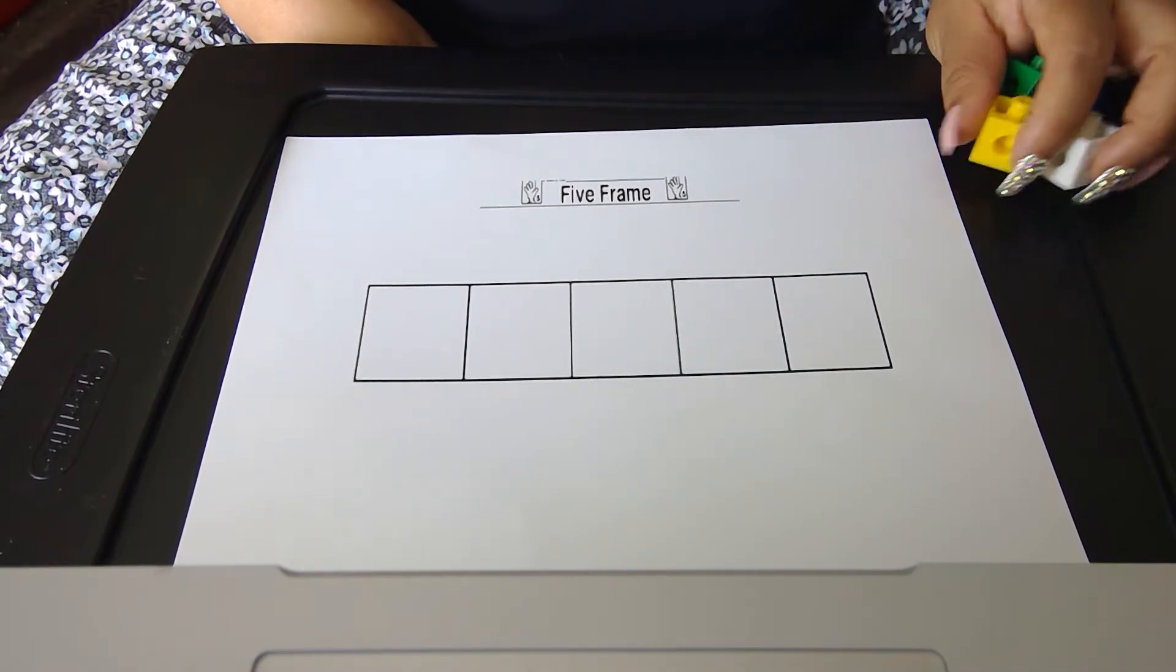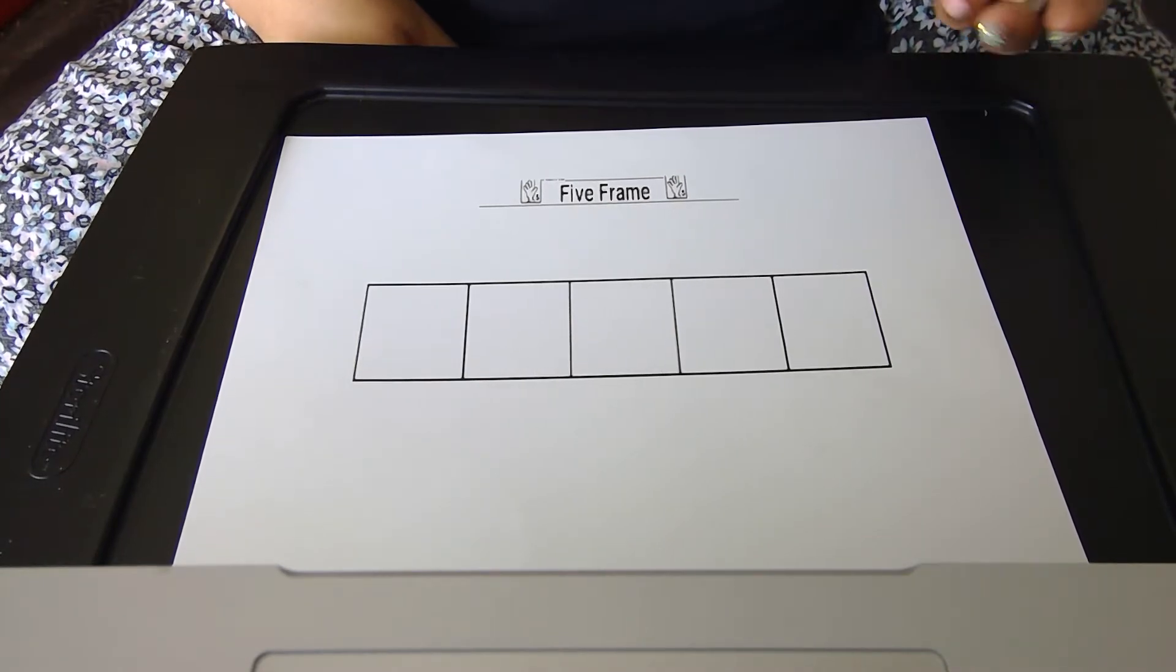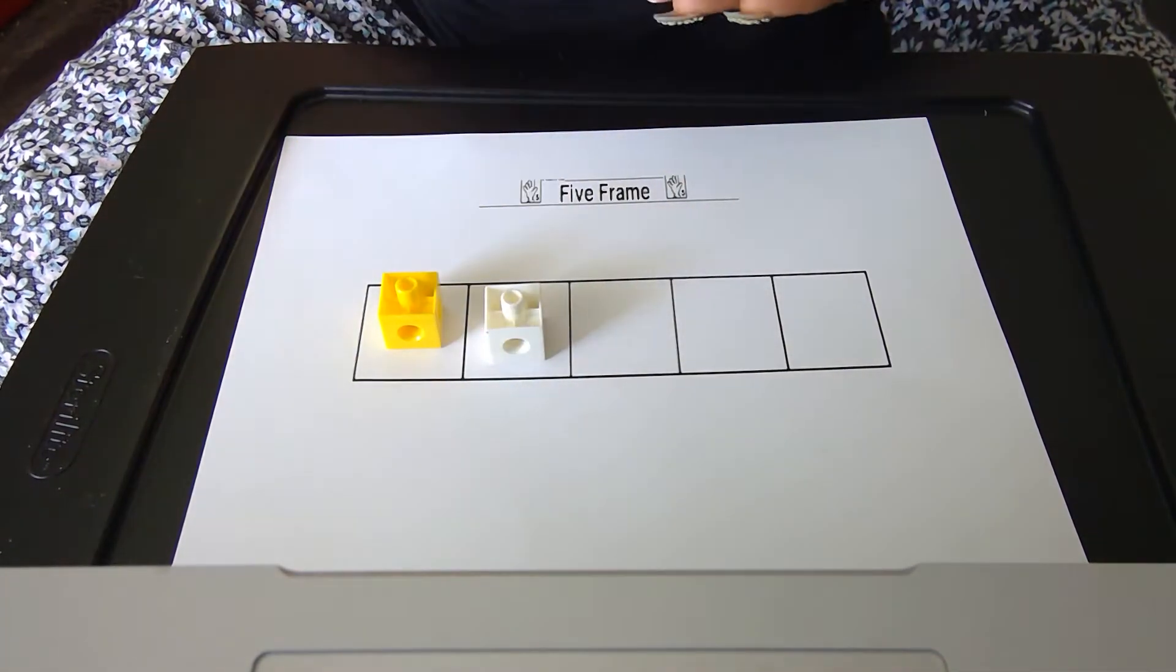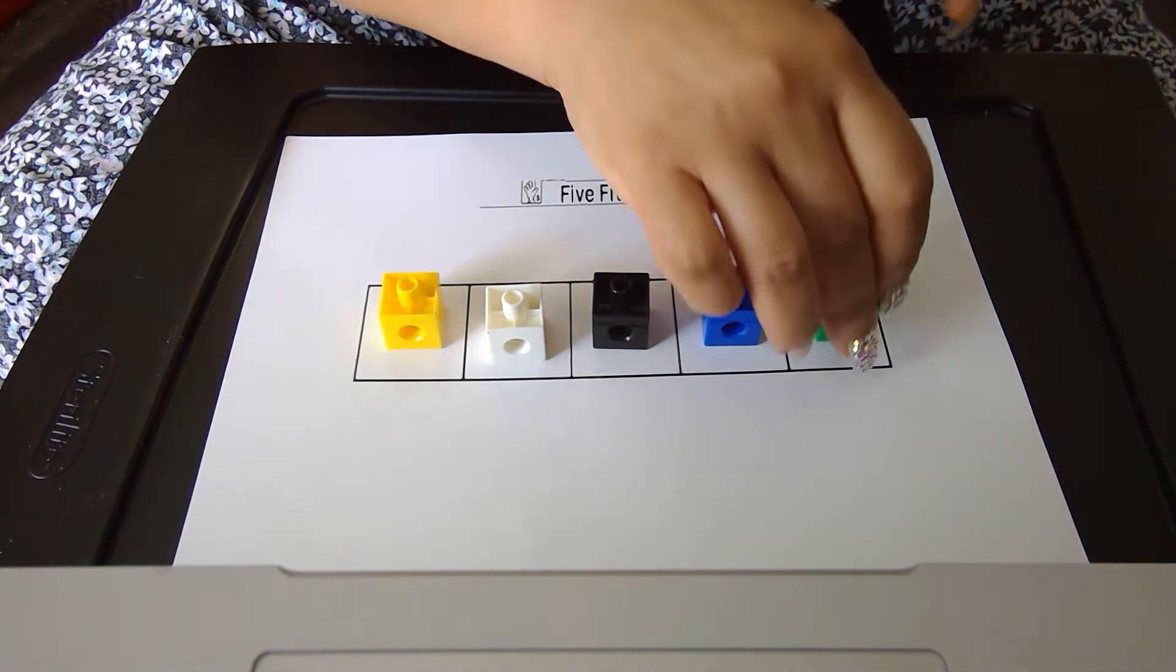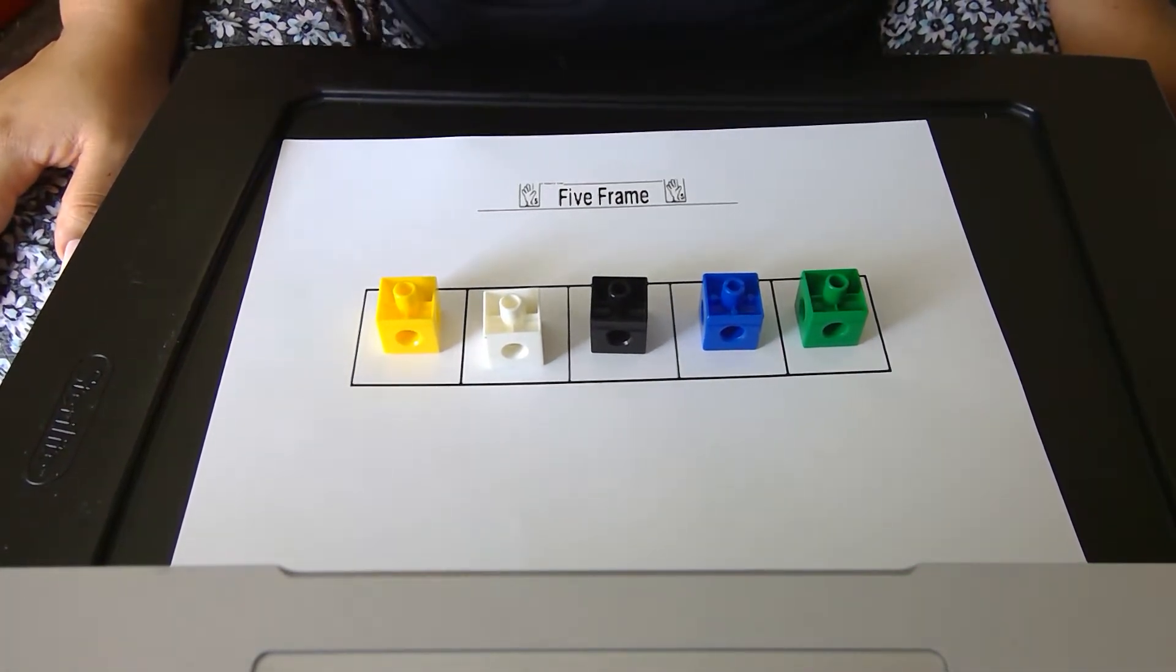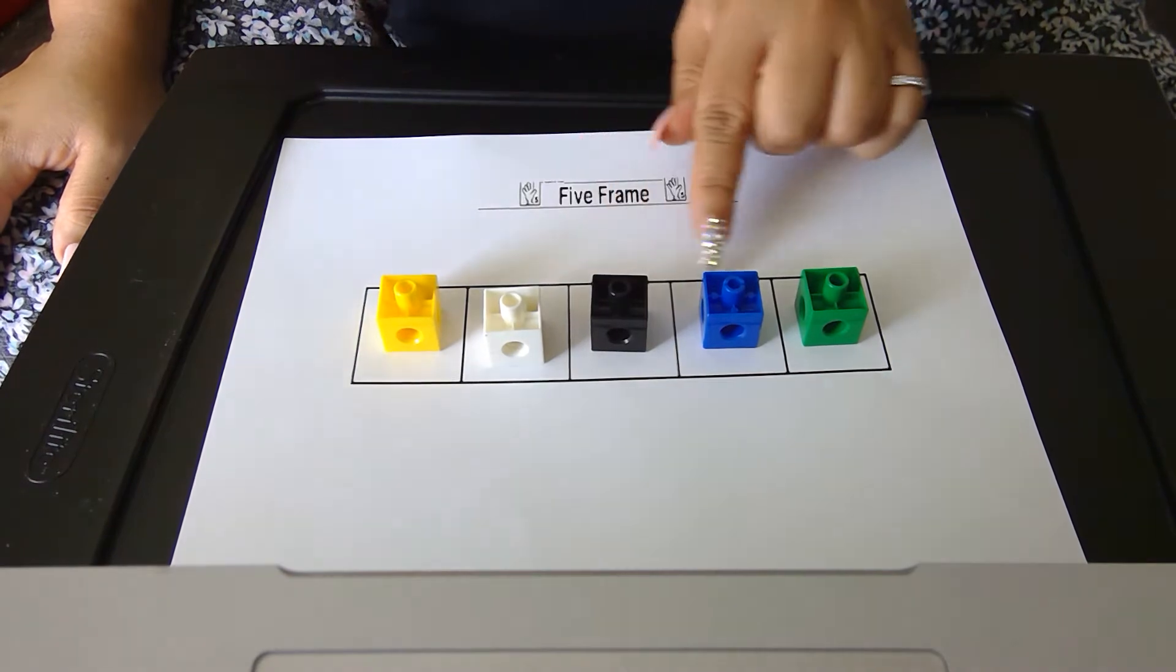This can help you when counting out how many cubes you have: one, two, three, four, five. I know that there are five counting cubes because I filled five boxes: one, two, three, four, five.